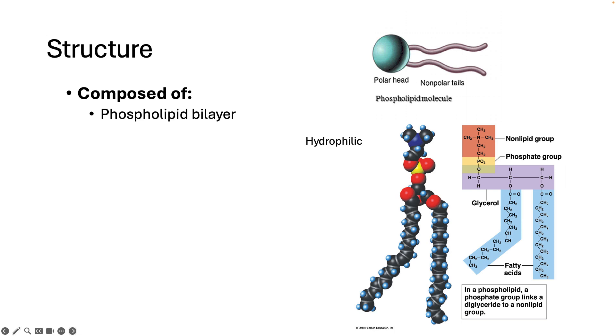The two tails are just long strings of carbons and hydrogens covalently bonded together. Those are called fatty acids. So each phospholipid has two fatty acid tails.